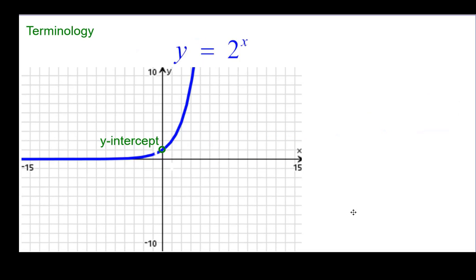Some terminology. We do have a y-intercept at 0, 1. The horizontal asymptote in this case is the line y equals 0 or the x-axis.